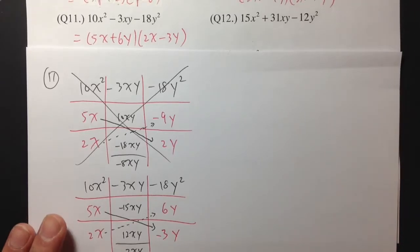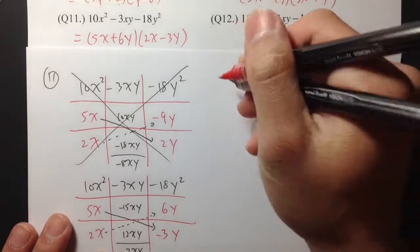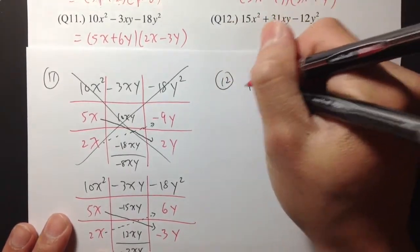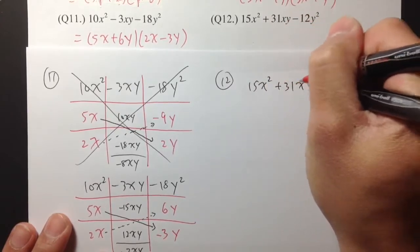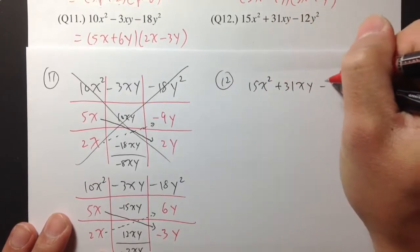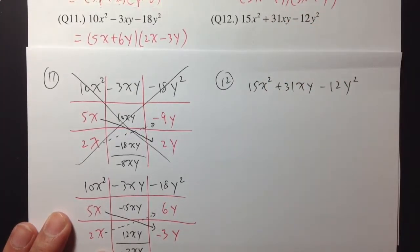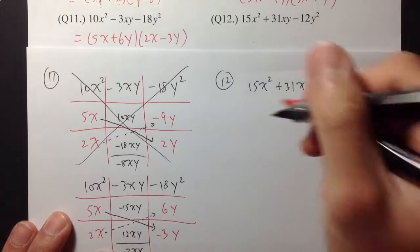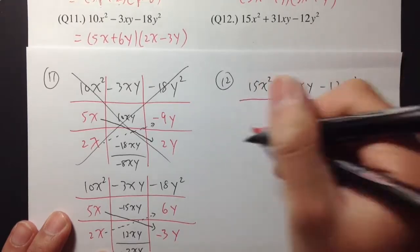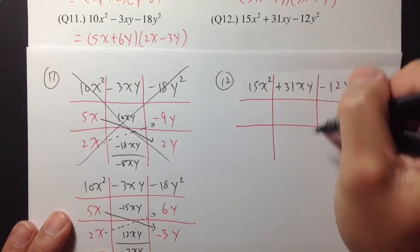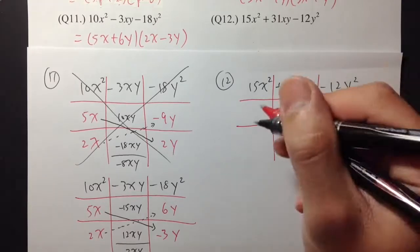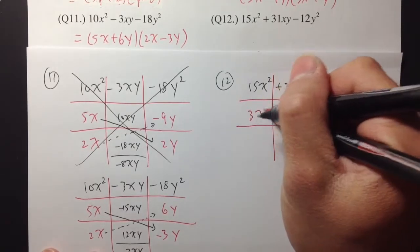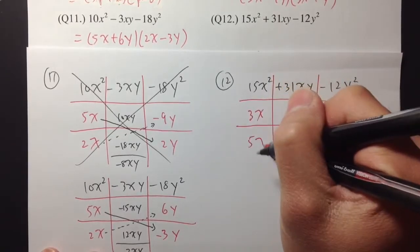Okay, number 12. 15x squared plus 31xy minus 12y squared. So let's see. To get 15x squared, the natural way is just 3x times 5x. And to get negative 12, 4 times 3 is equal to 12, or maybe 6 times 2 is also equal to 12.